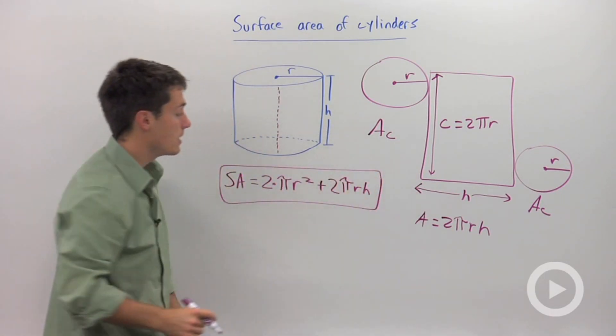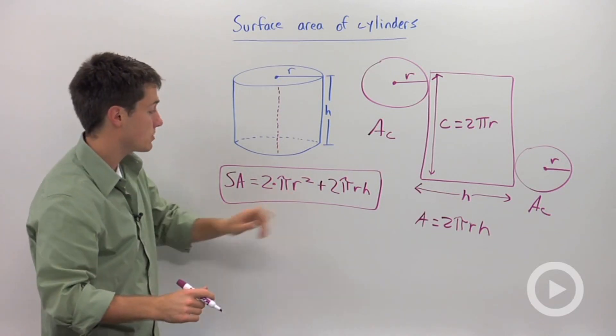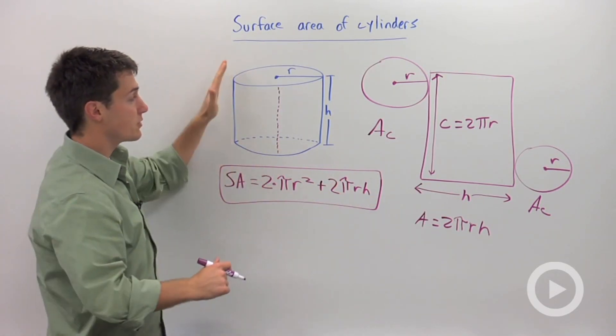So when you're calculating surface area, you're going to need to know a couple of things: the radius of your circle and the height of your cylinder.